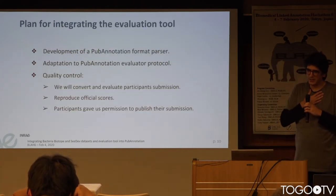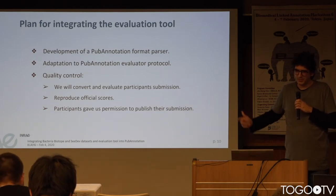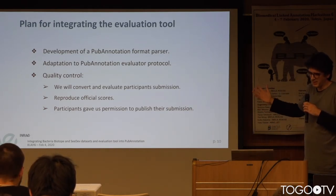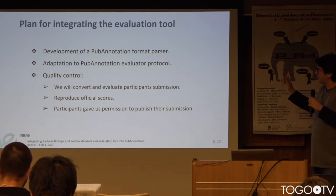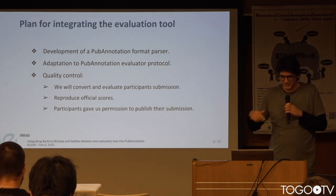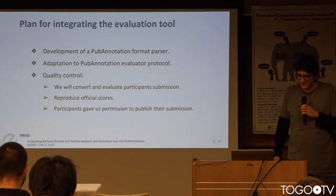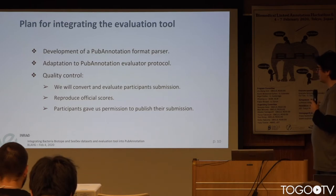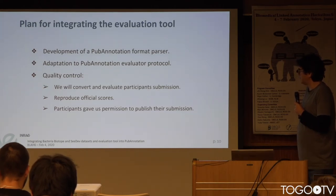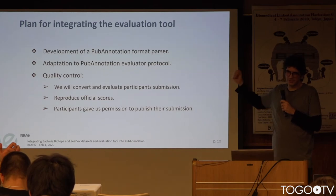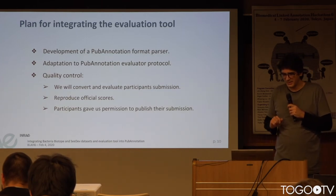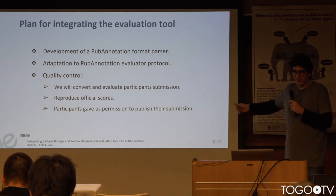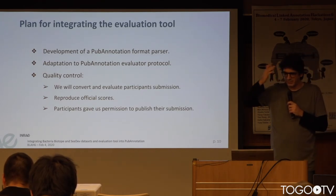To integrate this evaluation tool, we will have to develop a PubAnnotation format parser and adapt the API to the PubAnnotation plugin protocol, so we will need to look into the documentation. For quality control, we will check that the evaluation tool works correctly within PubAnnotation by converting and evaluating participant submissions, then trying to reproduce the official scores from last year. As a side note, participants explicitly gave us permission to publish their submissions.